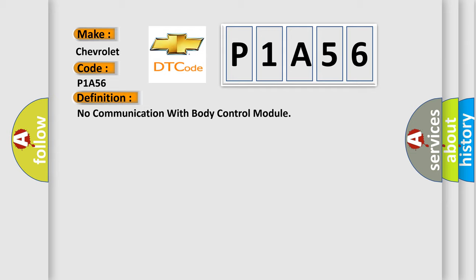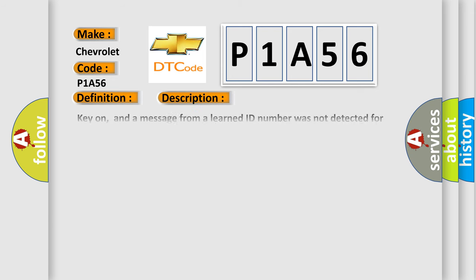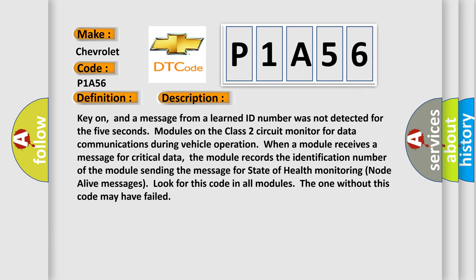And now this is a short description of this DTC code. Key on, and a message from a learned ID number was not detected for 5 seconds. Modules on the class 2 circuit monitor for data communications during vehicle operation. When a module receives a message for critical data, the module records the identification number of the module sending the message for state of health monitoring. Node alive messages look for this code in all modules; the one without this code may have failed.